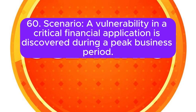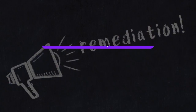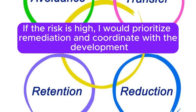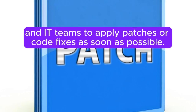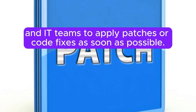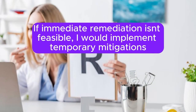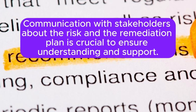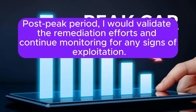Scenario 60: A vulnerability in a critical financial application is discovered during a peak business period. How do you manage the remediation process? I would assess the severity and impact of the vulnerability on the financial application and its users. If the risk is high, I would prioritize remediation and coordinate with the development and IT teams to apply patches or code fixes as soon as possible. If immediate remediation isn't feasible, I would implement temporary mitigations such as access restrictions, network segmentation, and enhanced monitoring. Communication with stakeholders about the risk and the remediation plan is crucial. Post-peak period, I would validate the remediation efforts and continue monitoring for any signs of exploitation.